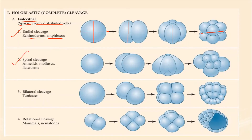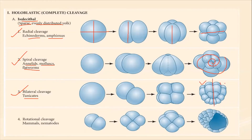The second type is spiral cleavage, found in annelids, molluscs, and flatworms. It forms a spiral pattern of cells from inside to out. Third is bilateral cleavage, found in tunicates, where the cells form a bilateral pattern with symmetry from left and right. Fourth is rotational cleavage, found in mammals and nematodes, where the cleaving cells undergo a rotation, forming a cavity.